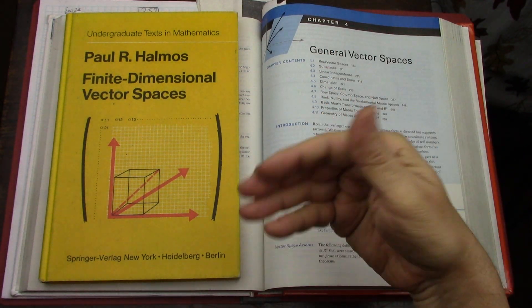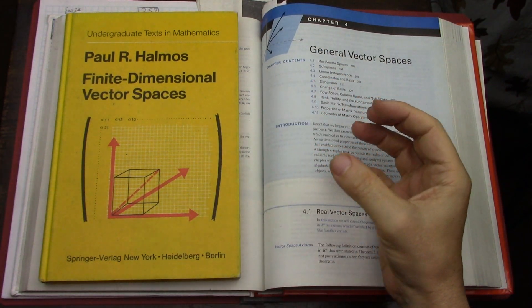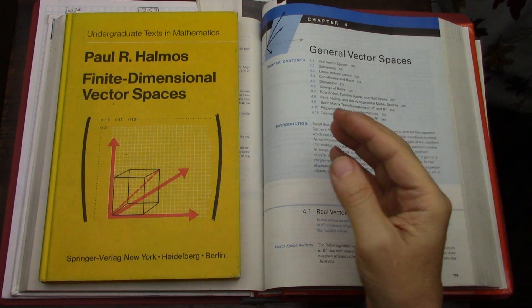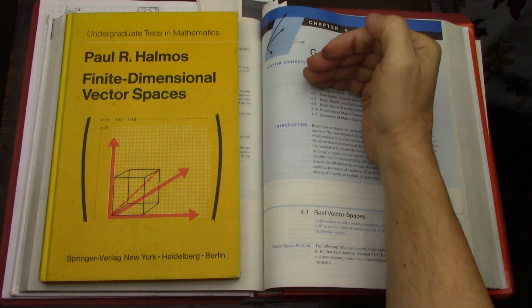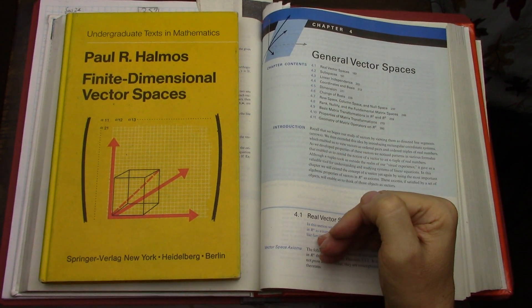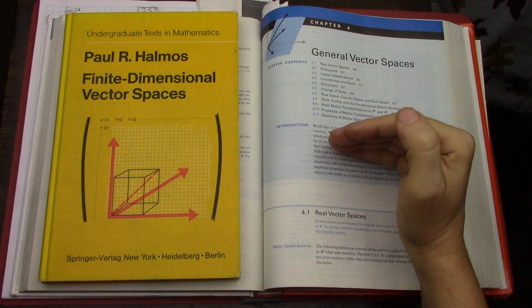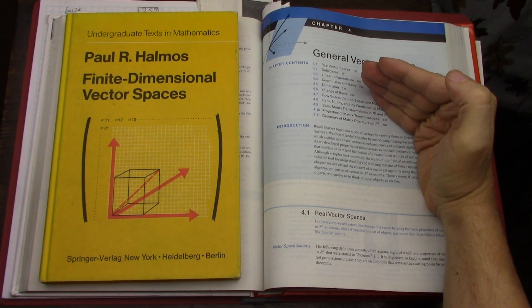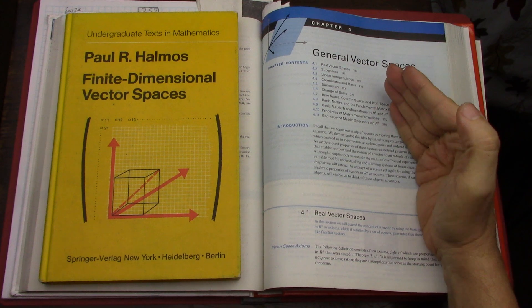But you'll see as I show the different books that different authors have made specific choices about how they want to go about this. In some cases they'll list them all, or list all the major ones, and then add a few as they talk about basis, linear independence, linear transformations or linear maps, which is the same thing.